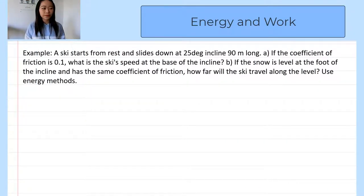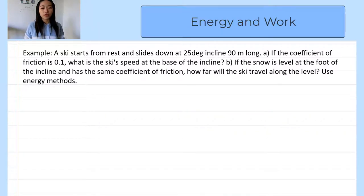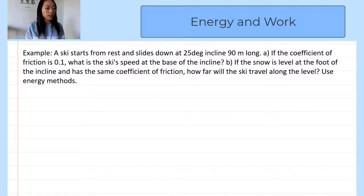Now let's look at this example. A skier starts from rest and slides down a 25-degree incline; the distance traveled is 90 meters. If the coefficient of friction is 0.1, what is the skier's speed at the base of the incline? And if the snow is level at the foot of the incline with the same coefficient of friction, how far will the skier travel along the level? There are two methods to solve this problem: the kinematic approach or the energy method. Here we are going to use the energy method.